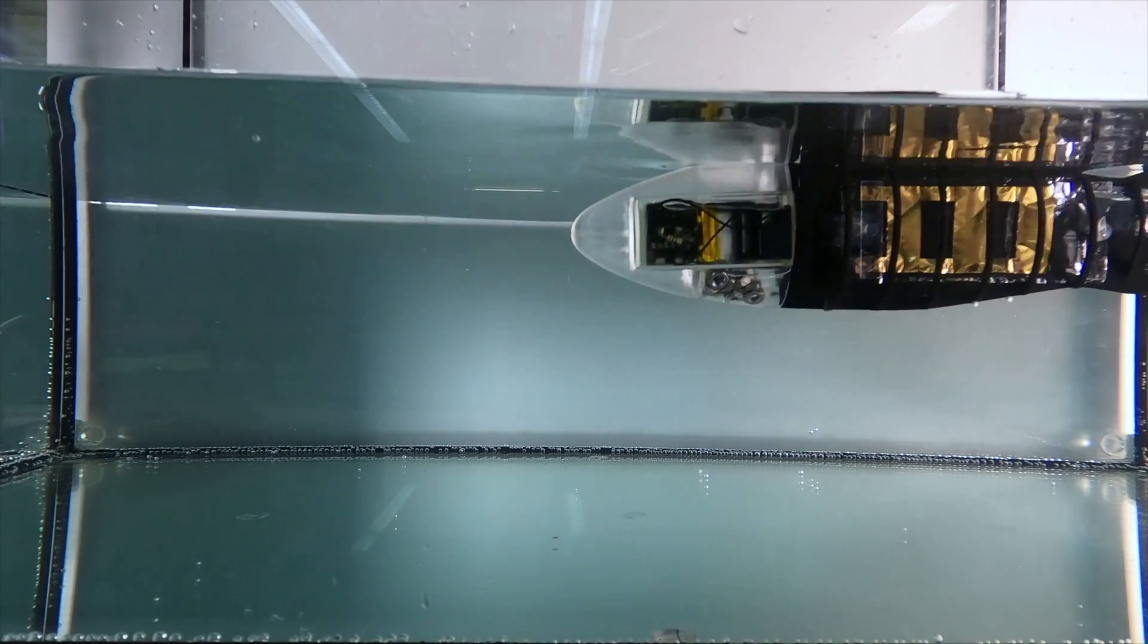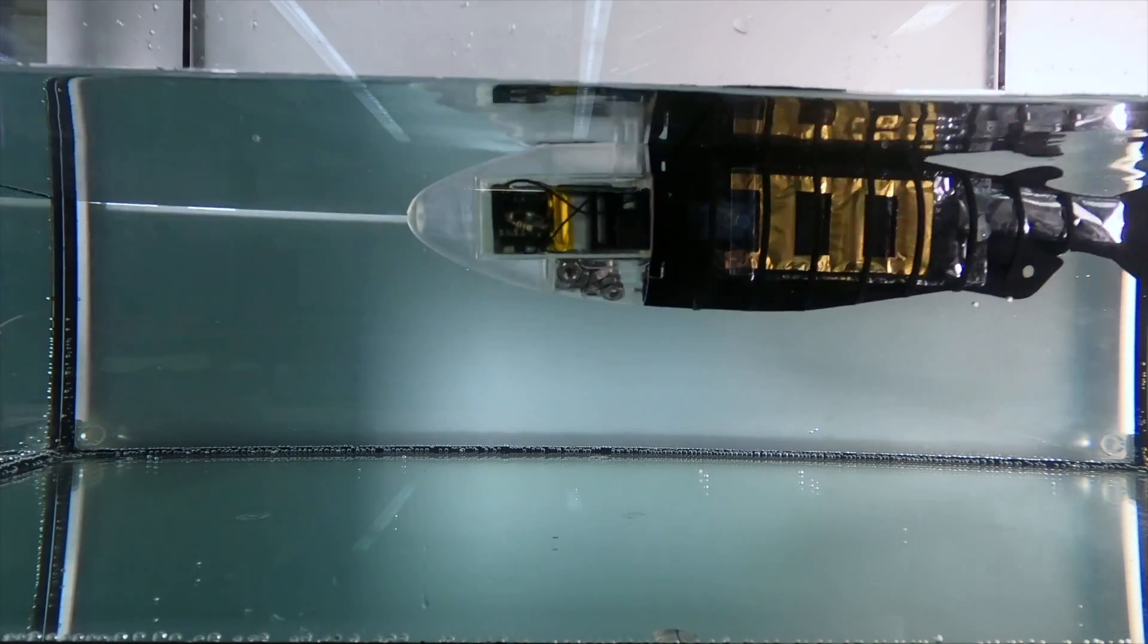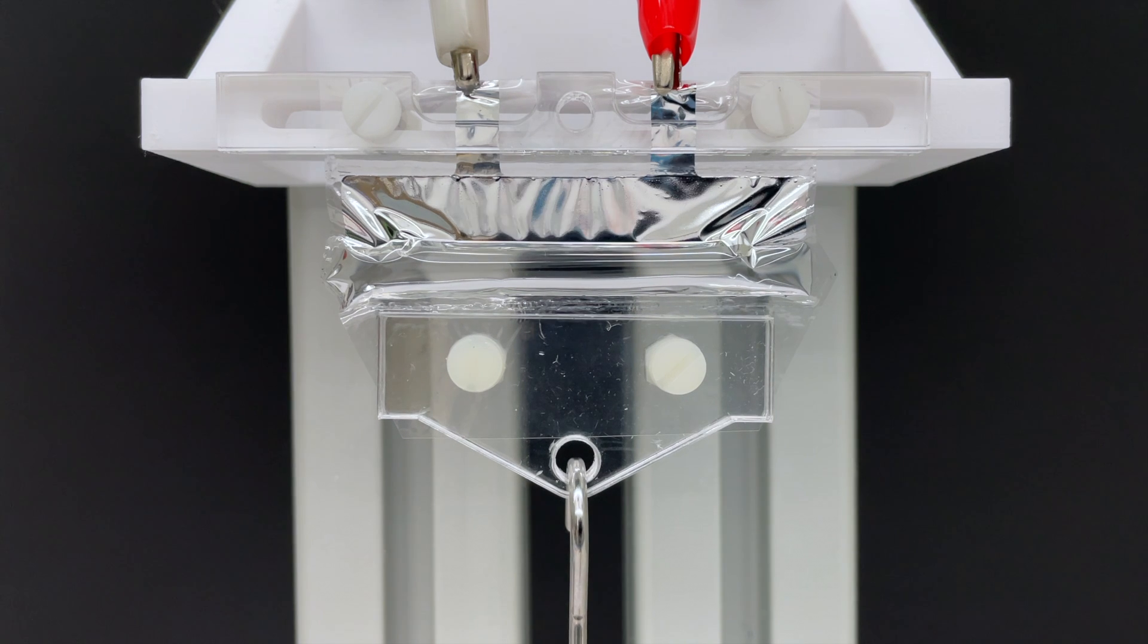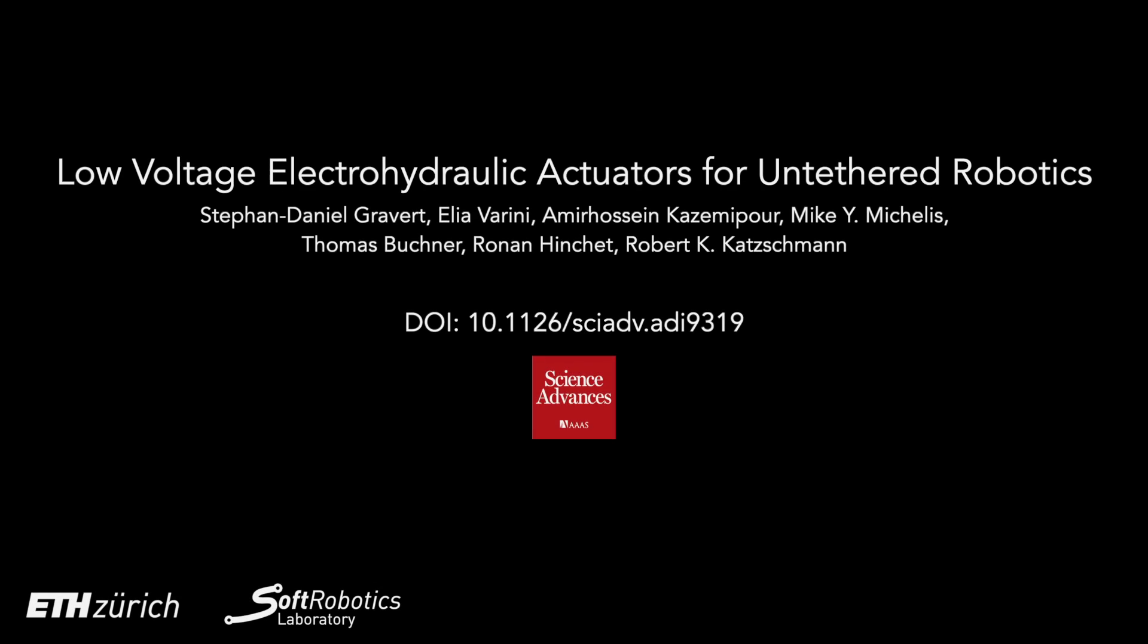Creating artificial muscles that closely mimic natural ones has been a challenging endeavor in robotics. We are here to present a new advancement in this field: low voltage electrohydraulic actuators designed for untethered robotics applications.